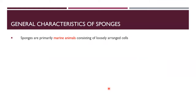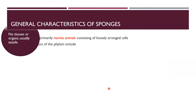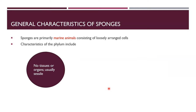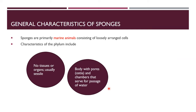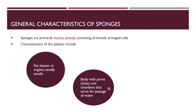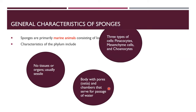General characteristics of sponges: sponges are primarily marine animals consisting of loosely arranged cells. They exist mostly in salty marine water. Their body has no tissues or organs; they are sessile and immovable. Their body has pores called ostia and chambers that serve for the passage of water.